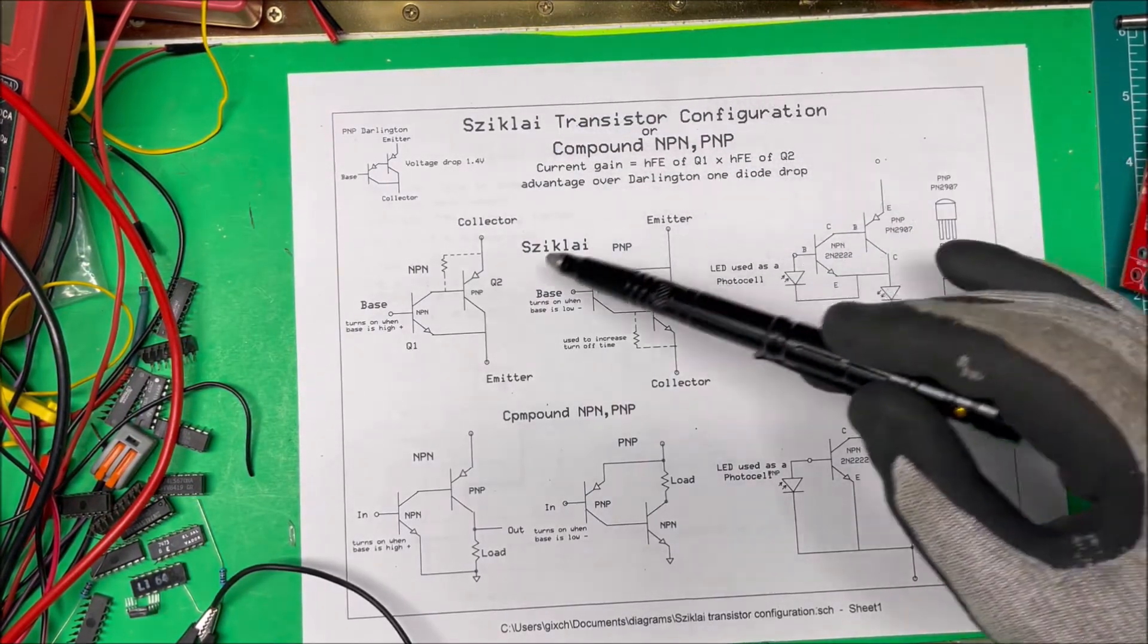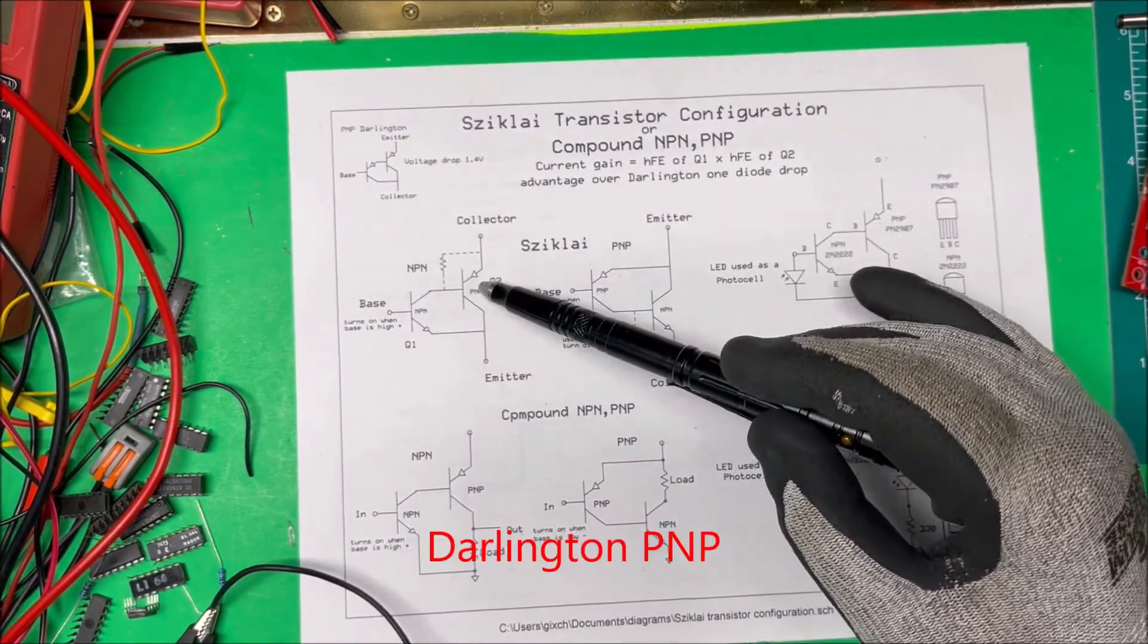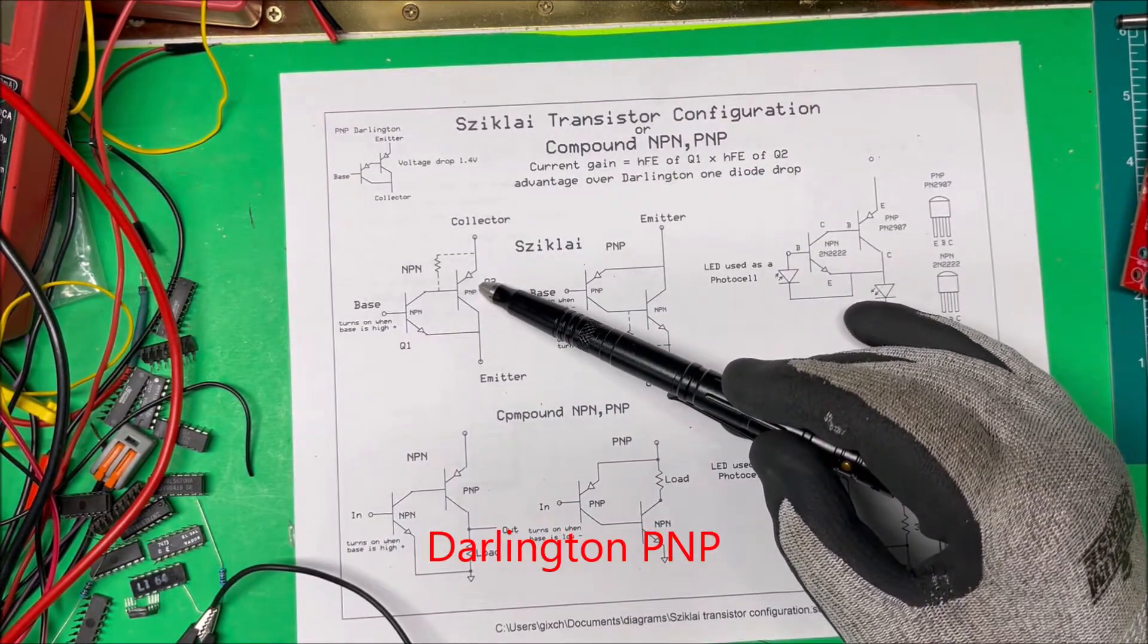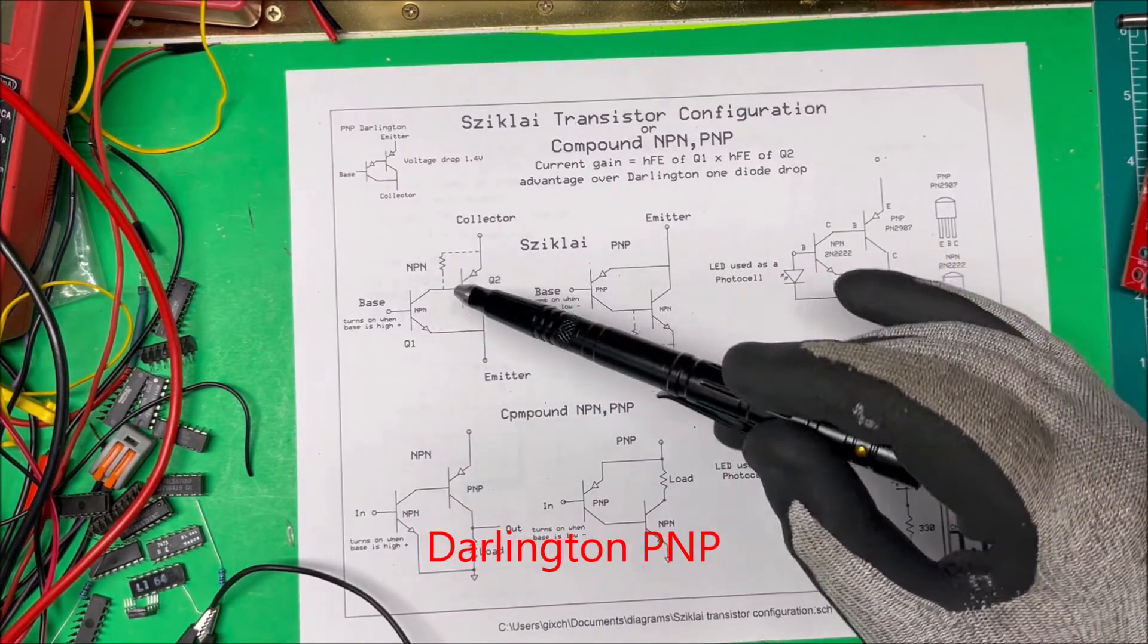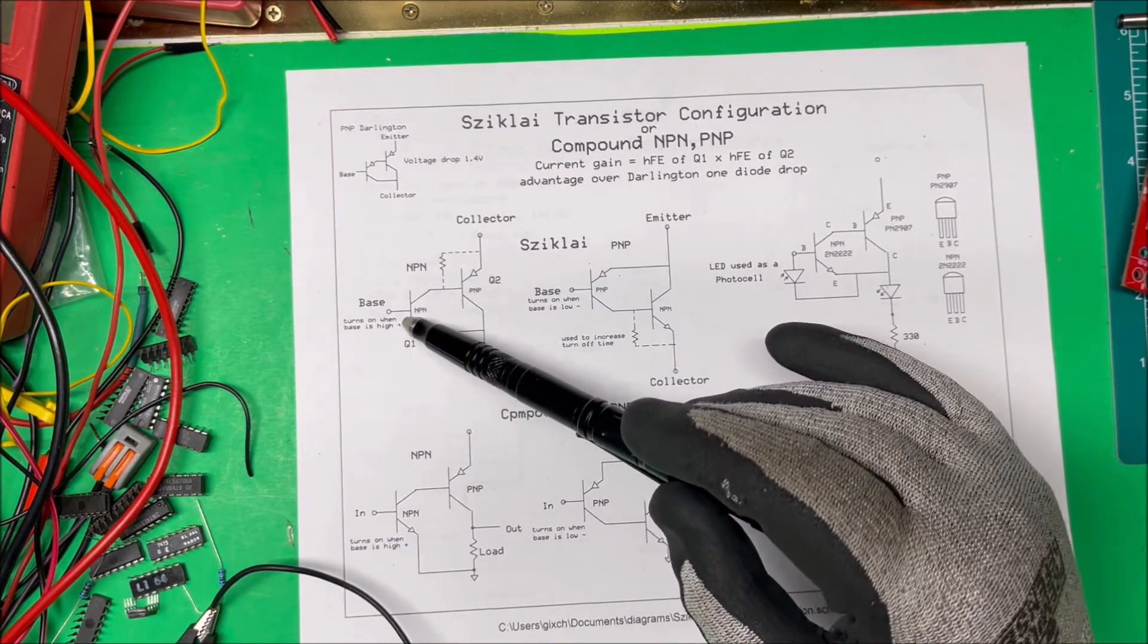This Sziklai transistor configuration is hooked up just like a PNP, and this was a PNP, but on this one here it's got a PNP and this is going to be an NPN transistor here.